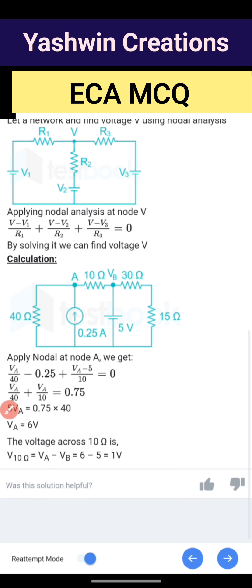Now we shall come to the problem. They have given to find the voltage across 10 ohm, that is Vb. The voltage across 10 ohm is Va minus Vb. When you solve Va minus Vb, you will get the voltage across 10 ohm.